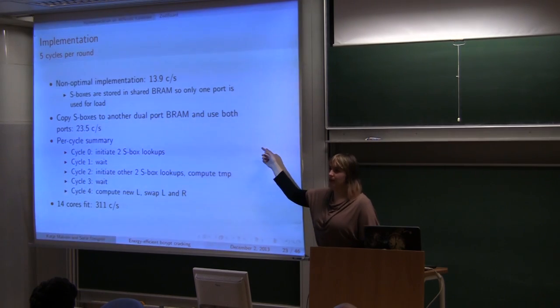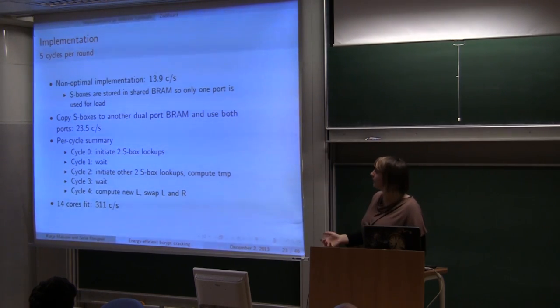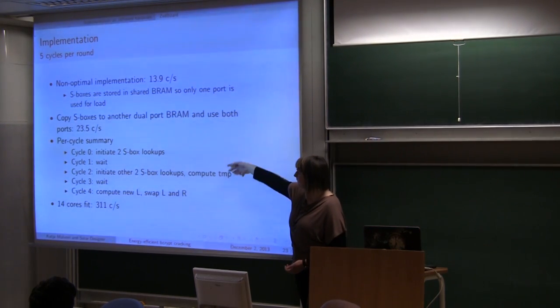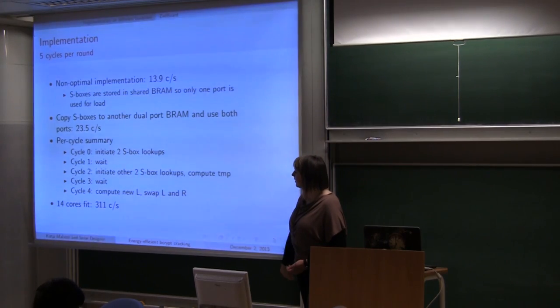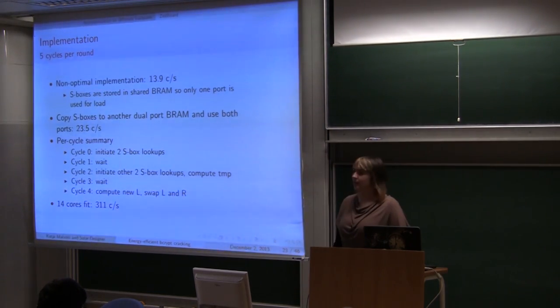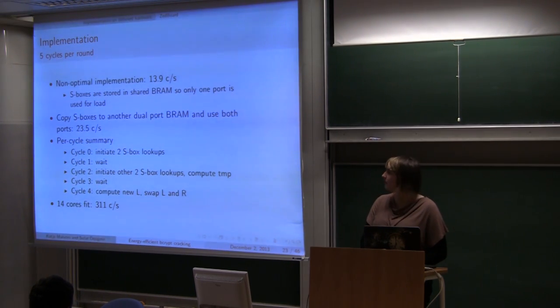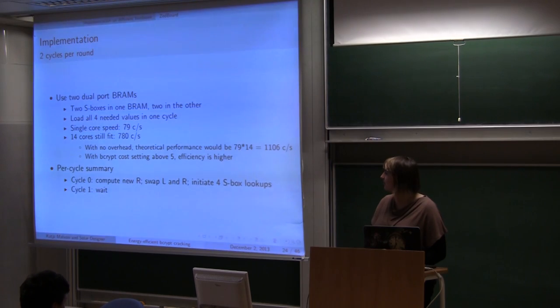So the next optimization was to copy S-boxes into local instances. Where we can use both ports. And thus have two lookups in one cycle. And then compute new L and R. With this approach we were able to fit 14 cores. With the performance of 311 cracks per second.